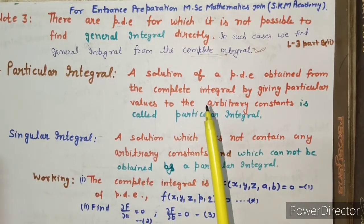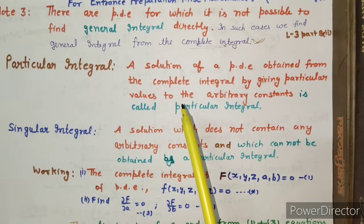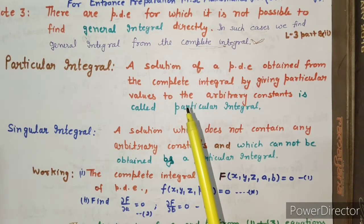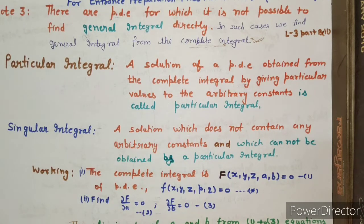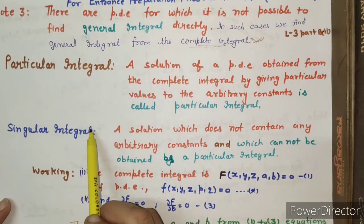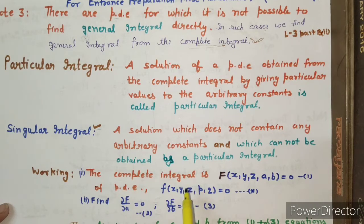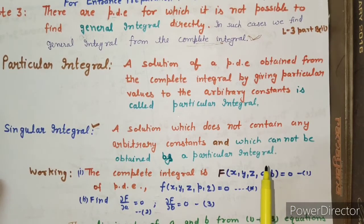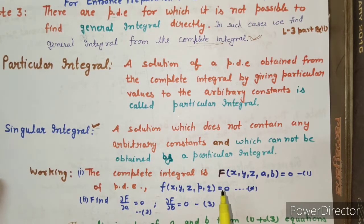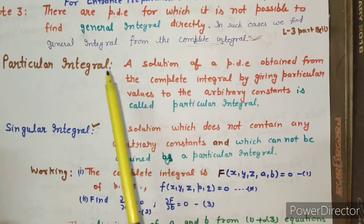Now there are two more types of solutions. Number one: any solution must satisfy the equation — that is the fundamental rule. Secondly, your solution can be general, complete, or it can be of the particular integral type or the singular integral type. So there are two sub-types. Now let us start with the definition. A solution — integral means solution — so we will start with the definition of a solution of a partial differential equation.